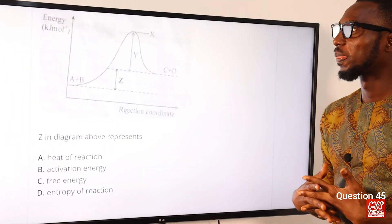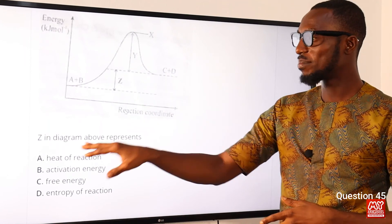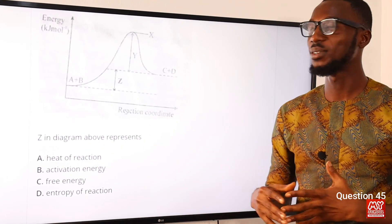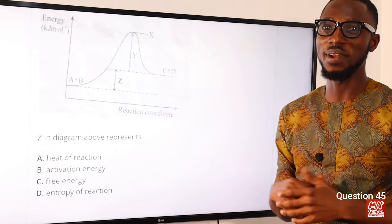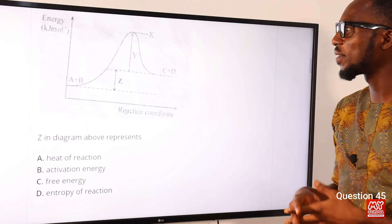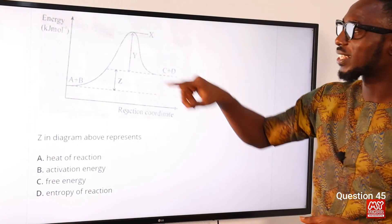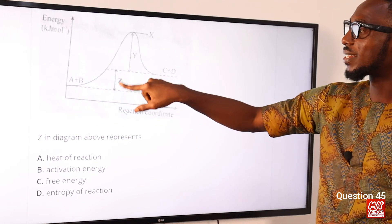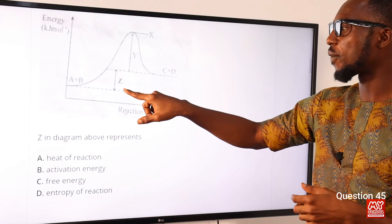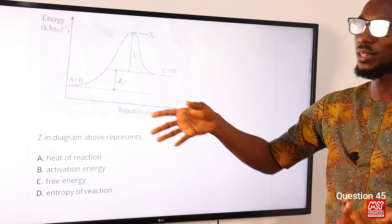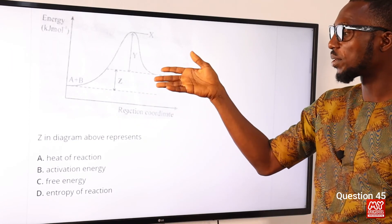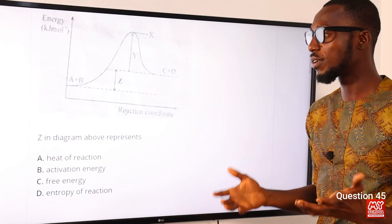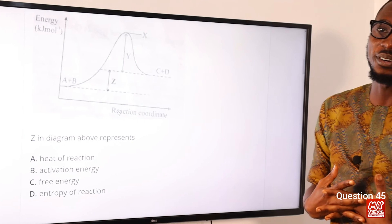Question 45: We have a reaction energy diagram. Z in the diagram above represents what? This is an endothermic reaction. The diagram shows activation energy, the reactants, the products, and the enthalpy change — which is positive. Z represents the enthalpy change of the reaction. The correct option is option A: enthalpy of reaction.